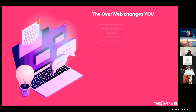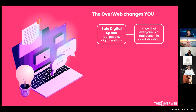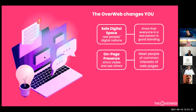This overweb really changes everything. There are three different elements. First: safe digital space — anyone you interact with in this annotation layer over the website is a real person with standing in the system. So there are no unidentified bots, no fake accounts, no serial abusers. Second: on-page presence — you can go visible on any web page and see anyone else who happens to go visible on that same web page at the same time or previously.